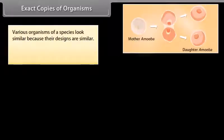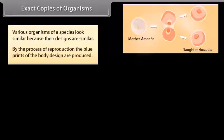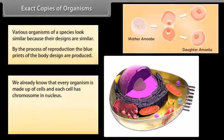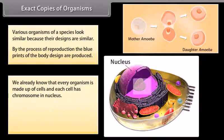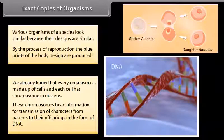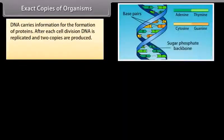Various organisms of a species look similar because their designs are similar. By the process of reproduction, the blueprints of the body design are produced. Every organism is made up of cells, and each cell has chromosomes in its nucleus. These chromosomes bear information for transmission of characters from parents to their offspring in the form of DNA. DNA carries information for the formation of proteins. After each cell division, DNA is replicated and two copies are produced.